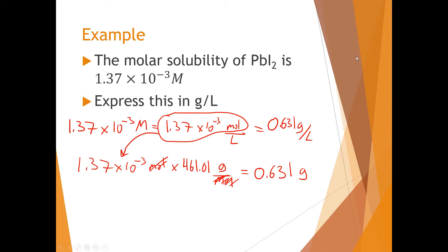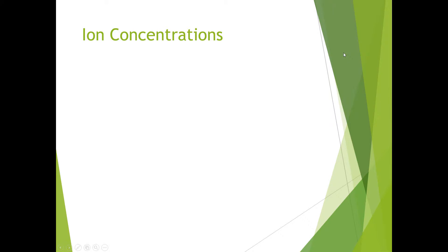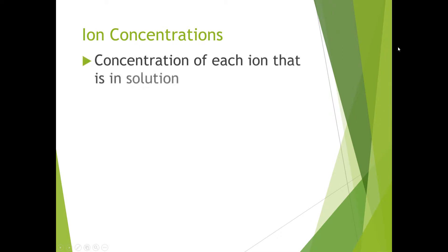Solubility is just a measure of how much stuff you can dissolve in a certain amount of solvent, and it's easy to express either as a concentration in molarity — that's molar solubility — or as grams per liter, which is mass solubility. In a lot of cases, we're very interested in the concentration of the ions present in the solution, so it's very useful to be able to calculate ion concentrations. Ion concentration is, by definition, just the concentration of each ion in the solution.